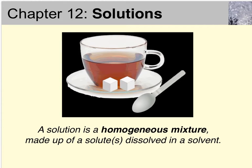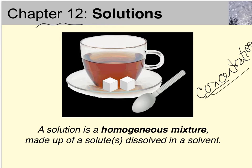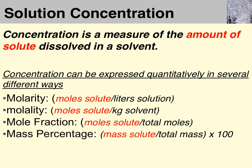This is the second of two lectures from Chapter 12 about solutions, and this one is about the various units of concentration that chemists use. Concentration basically tells us how much solute has been dissolved in a solvent. The four that we'll be focusing on — there are a lot more — are molarity, by far the most important one, molality, mole fraction, and mass percentage.